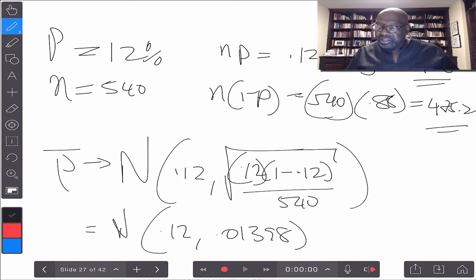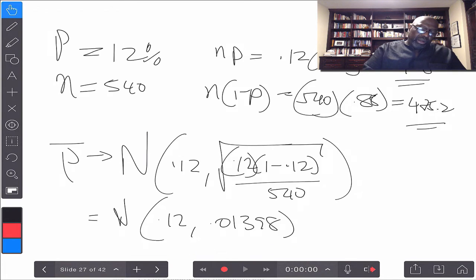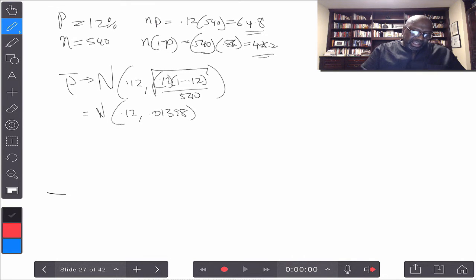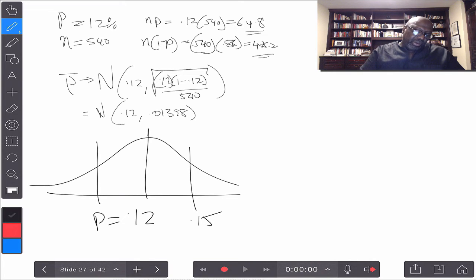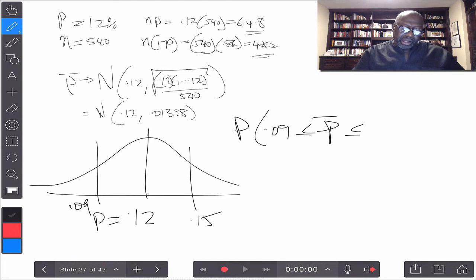What is the probability that your survey will produce a sample proportion within 3% of the population proportion? What's the chance that when you take that sample, that you'll be within 3%? Now, remember, this is 0.12. Within 3% means 3% that way and 3% this way. 12 plus 0.03 makes it 0.15. 12 minus 0.03 makes it 0.09.